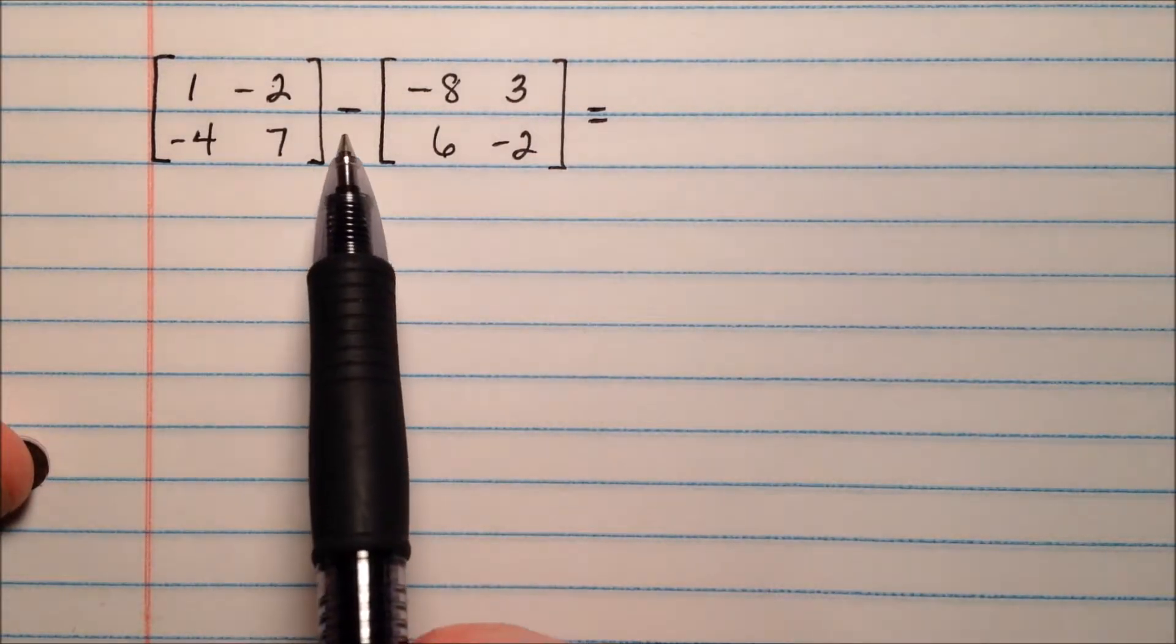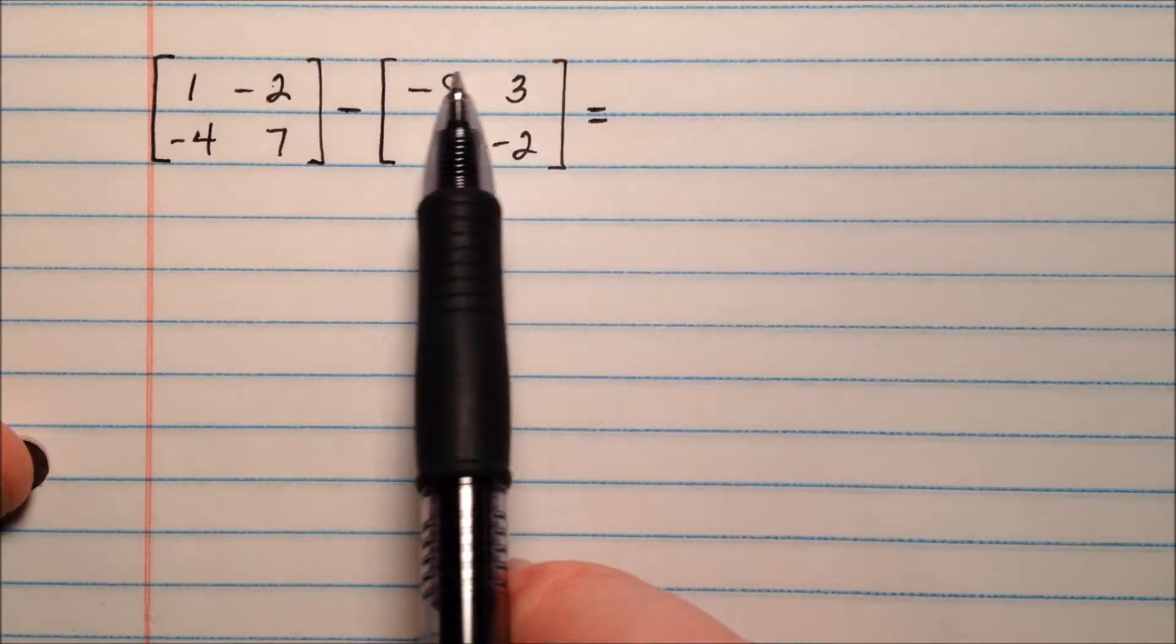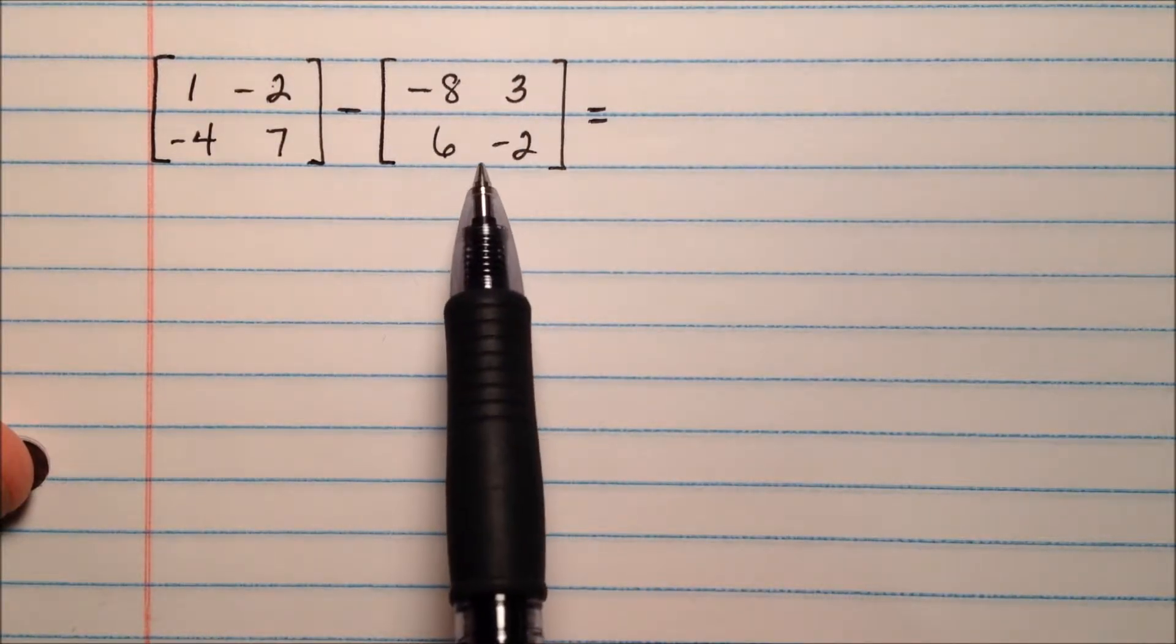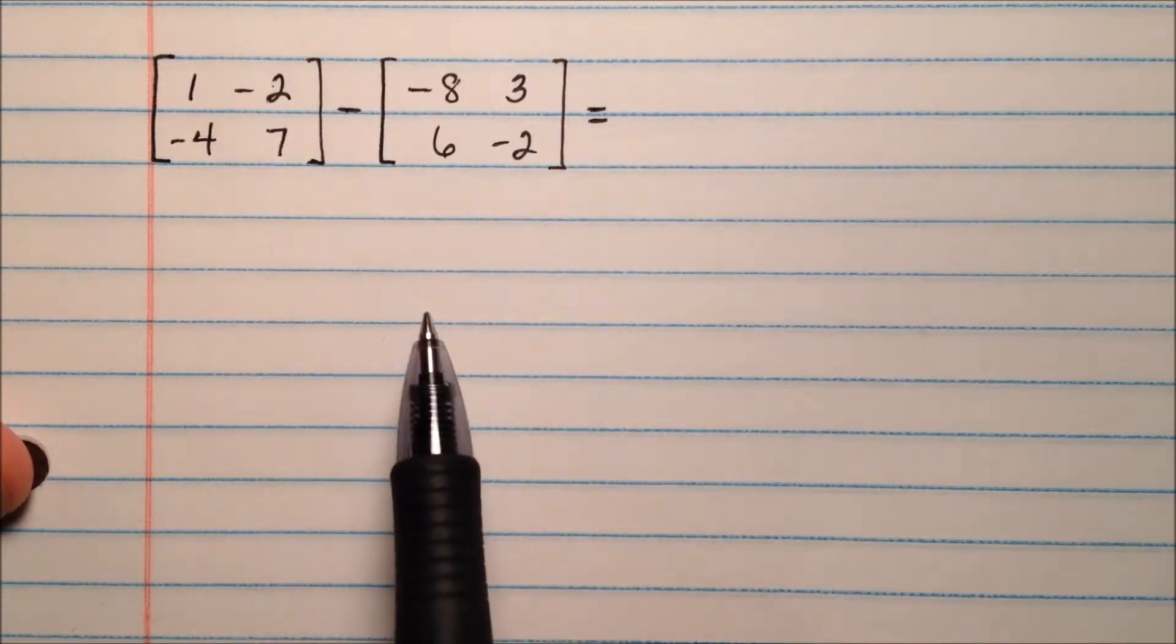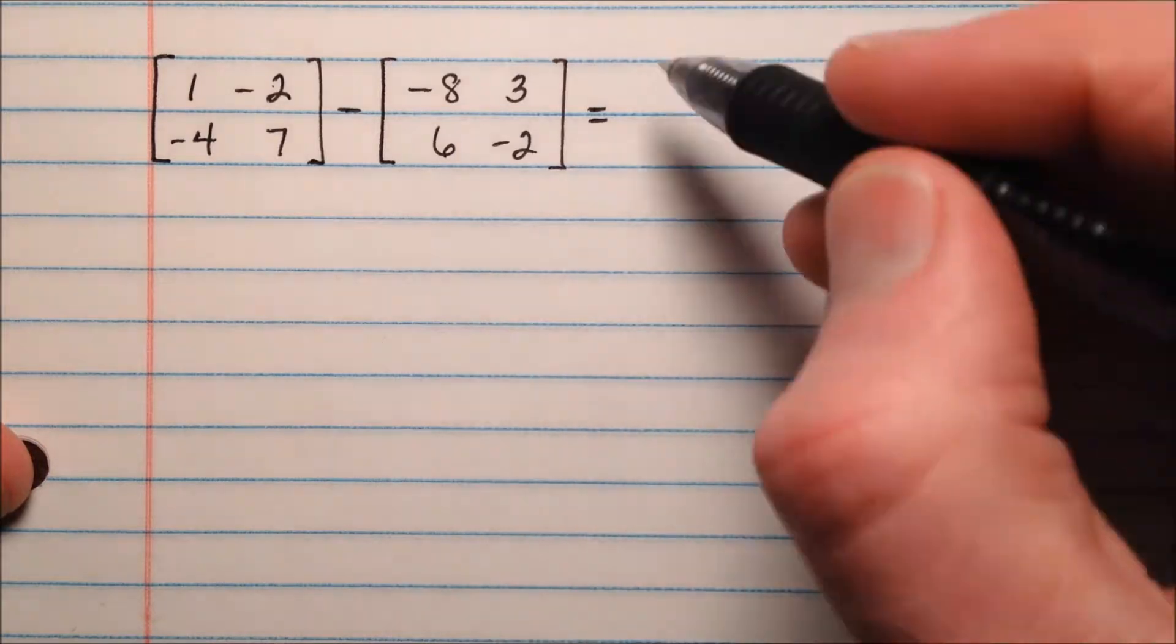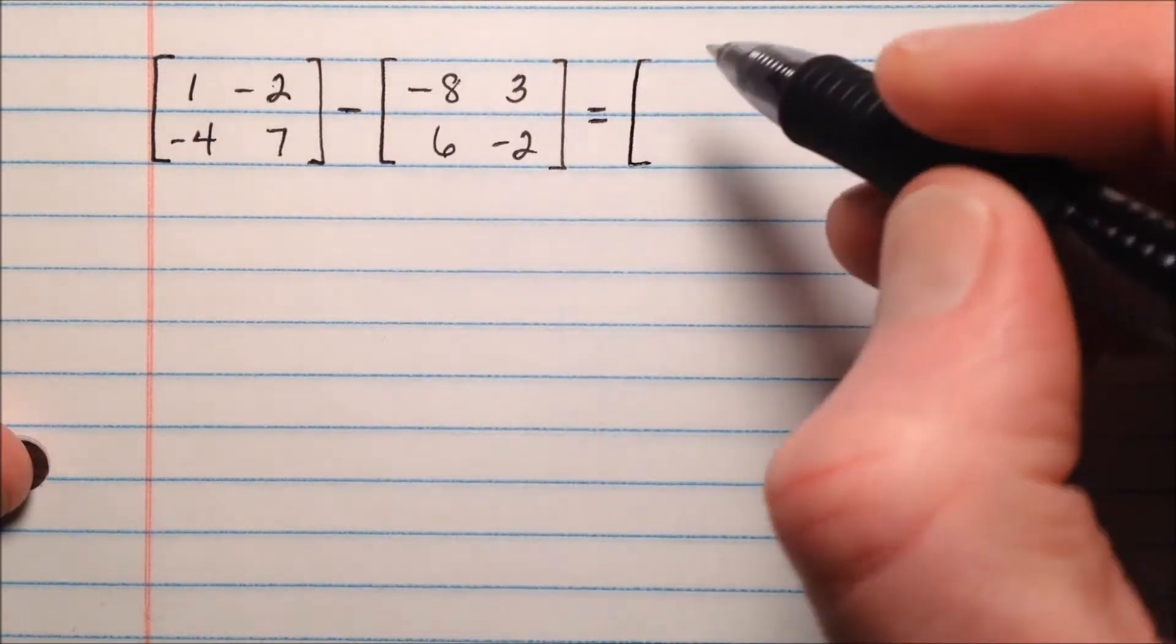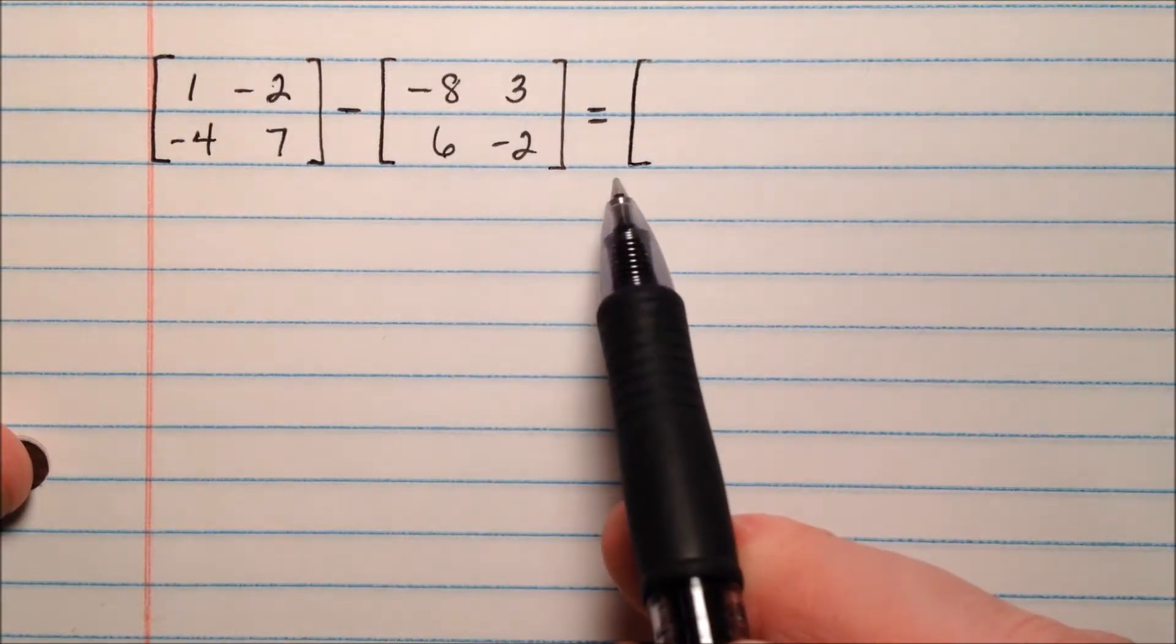What I have here is a subtraction problem with a 2 by 2 matrix being subtracted by another 2 by 2 matrix. Since the dimensions are the same, I can go ahead and do this subtraction. The matrix I'm going to get when I'm done is going to be another 2 by 2 matrix.